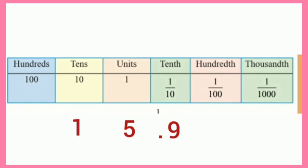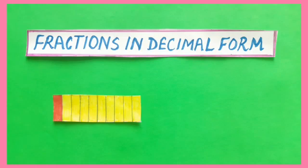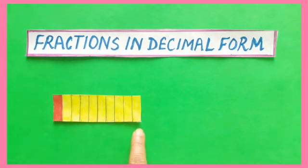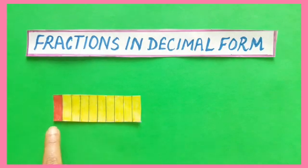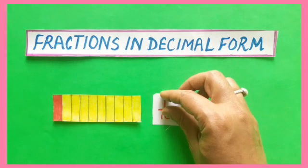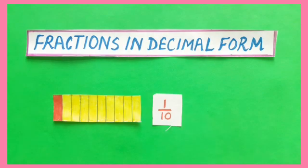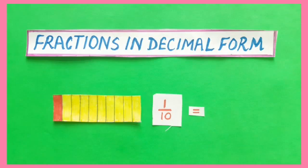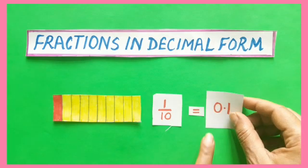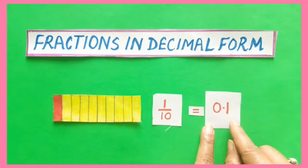We will do more examples. There is a rectangle and it is divided into 10 equal parts. Out of these 10 parts, one part is colored red. The fraction of this colored part is 1 by 10, and in decimal form this is equal to 0.1.